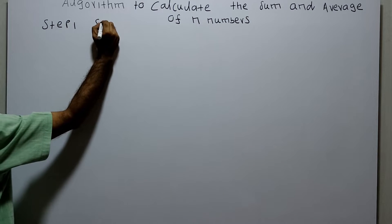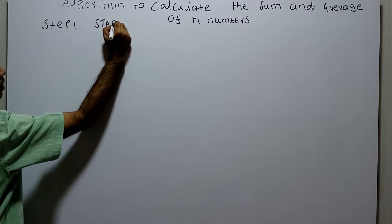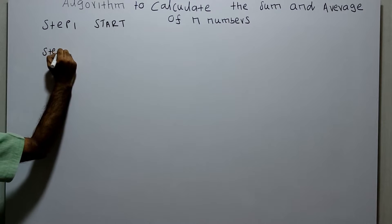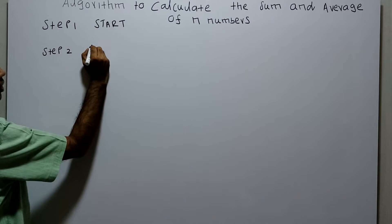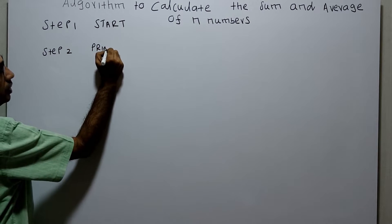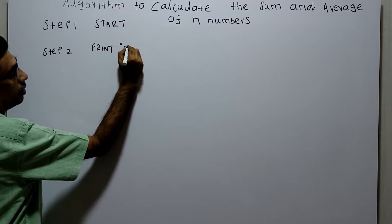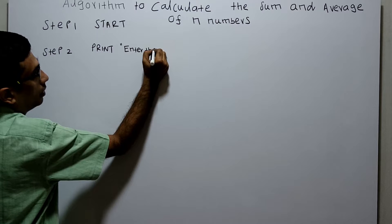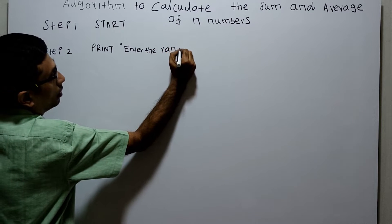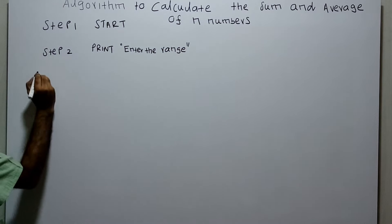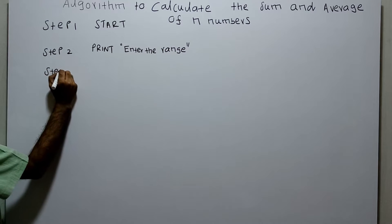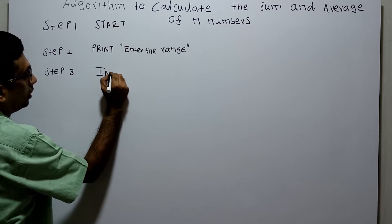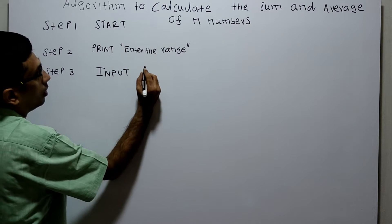Step 1 is the logical start of the algorithm. Step 2: I ask the user to enter the range. Step 3: I am obtaining the input of the range in the variable n.